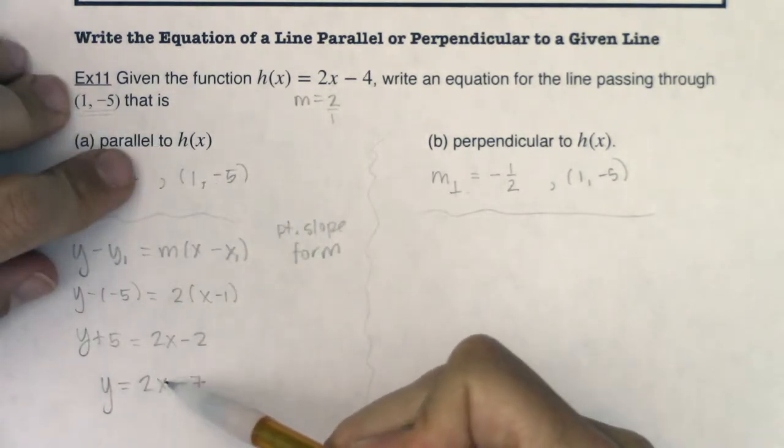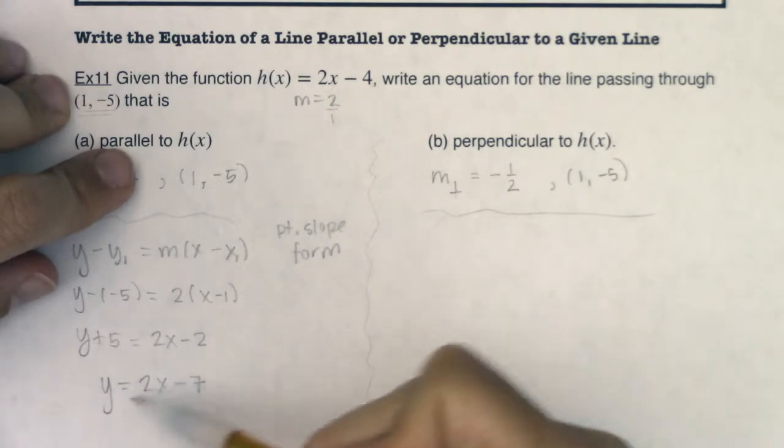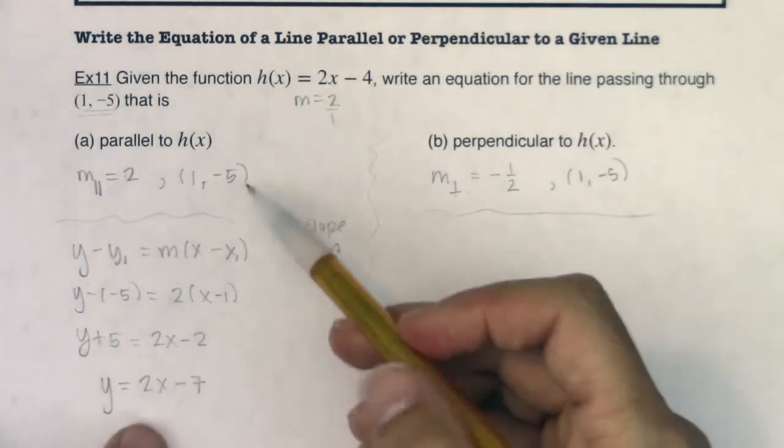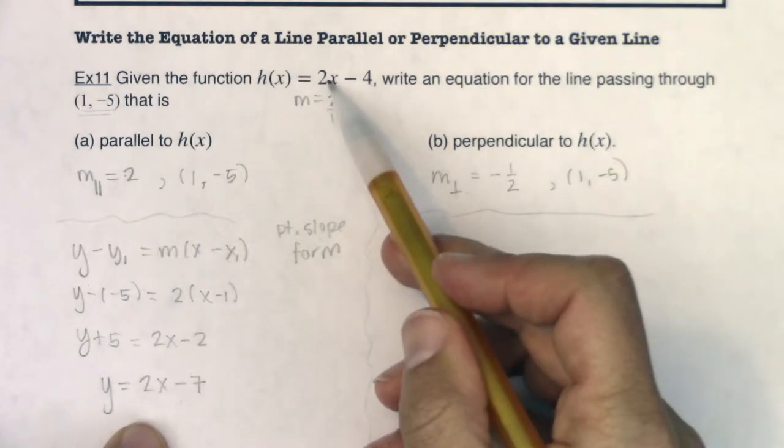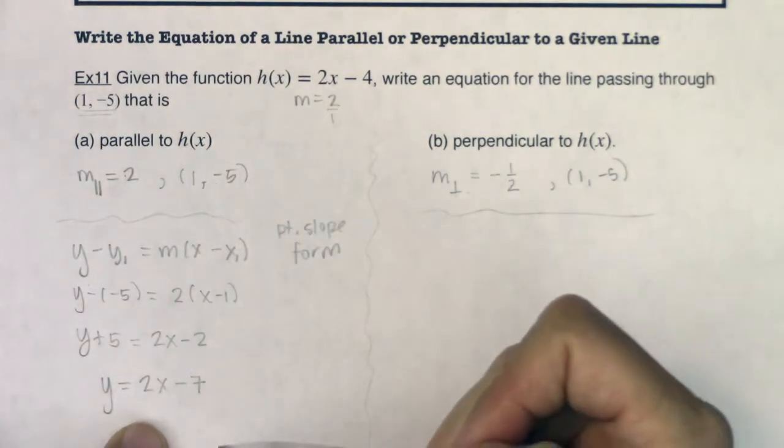Well, if I plug 1 in, 2 times 1 is 2. 2 minus 7 is negative 5. So this is it, right? This line is parallel to my given line and it passes through (1, -5). Great.